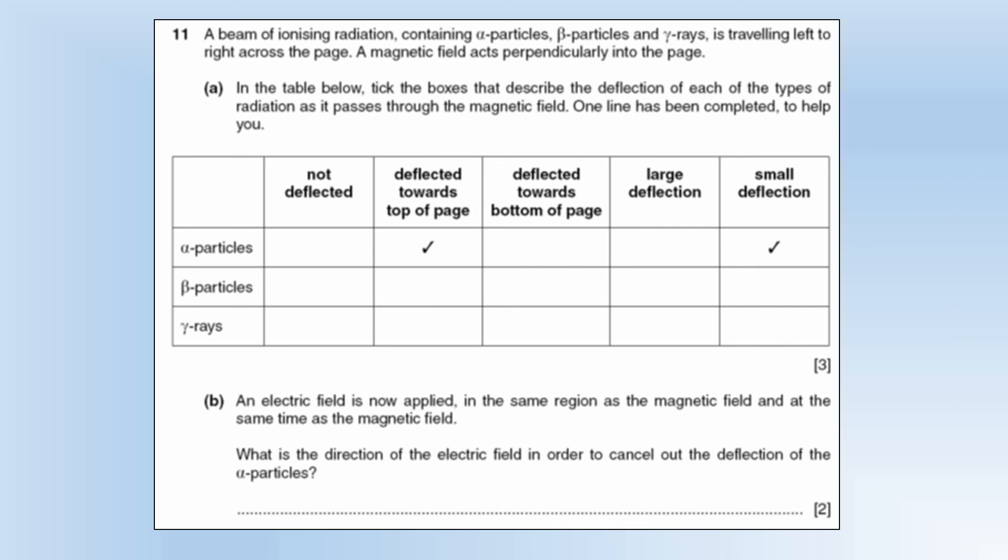So a beam of ionizing radiation containing alpha particles, beta particles, and gamma rays is traveling left to right across the page. The magnetic field acts perpendicular into the page. In the table below, tick the boxes that describe the deflection of each of the types of radiation as it passes through. So it says an alpha particle is going to deflect towards the top of the page. So let's check that.